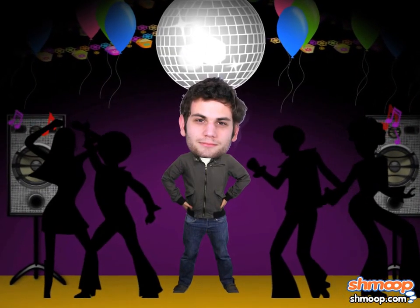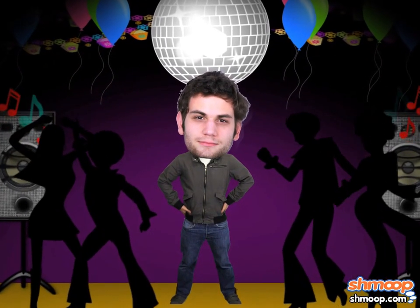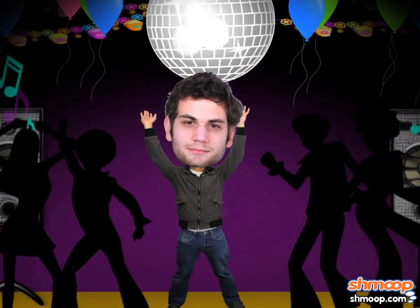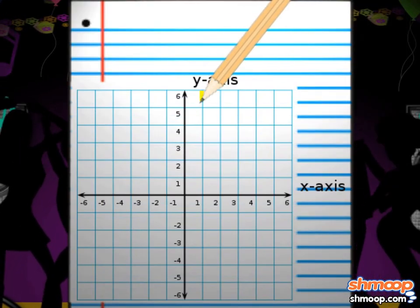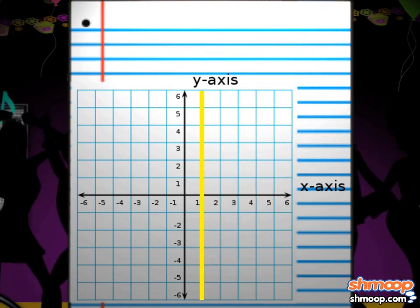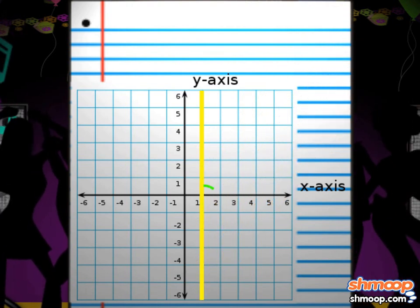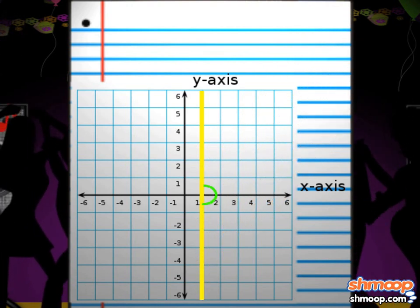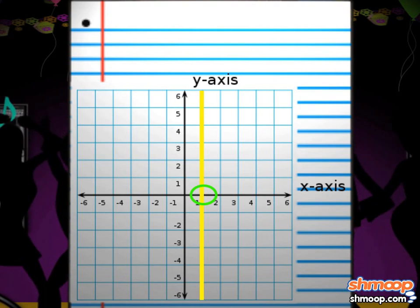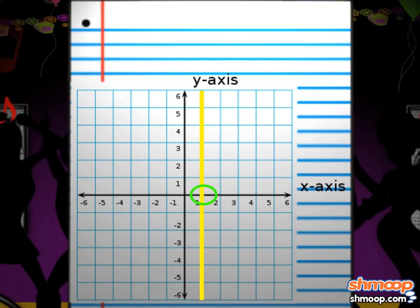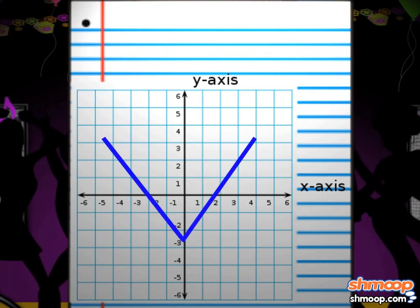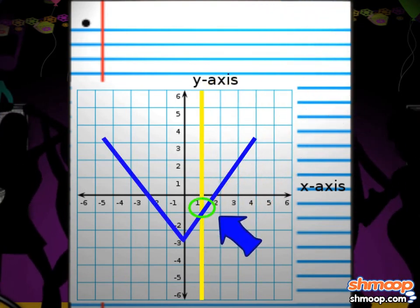Michael hears his favorite song, YMCA, and starts making the Y. Is this a function? To see if it's a function, we can use the vertical line test. If any vertical line touches the graph only at one point at a time, it is a function. So yes, Y is a function.